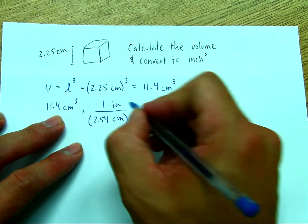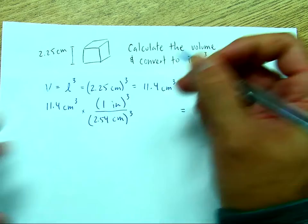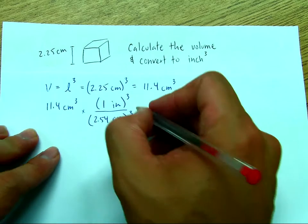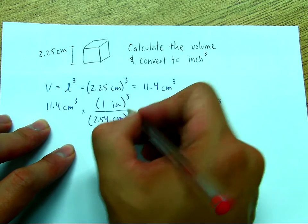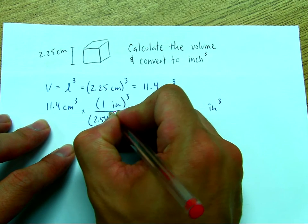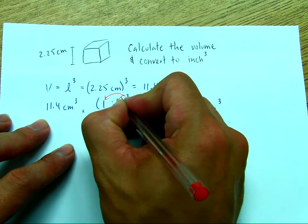So, I'm going to cube this. Whatever we do to the bottom, we do to the top. Now, if you write to the power of 3 on the outside, it's going to affect both the number and the unit for both top and bottom.